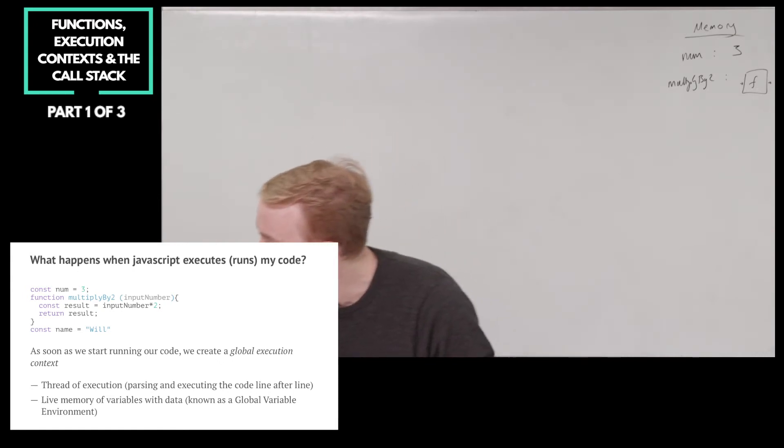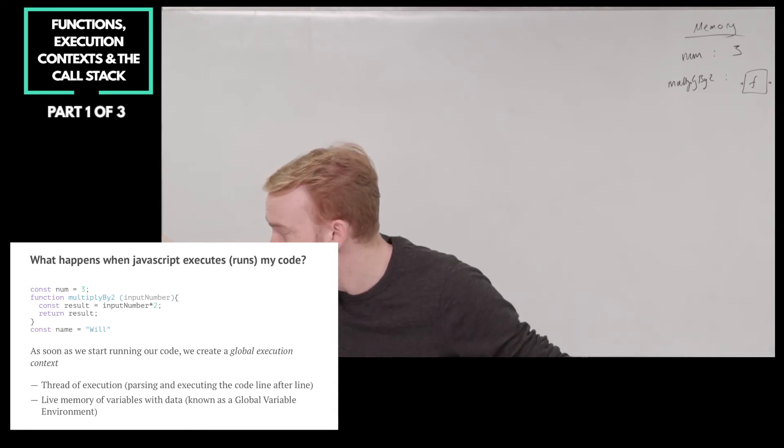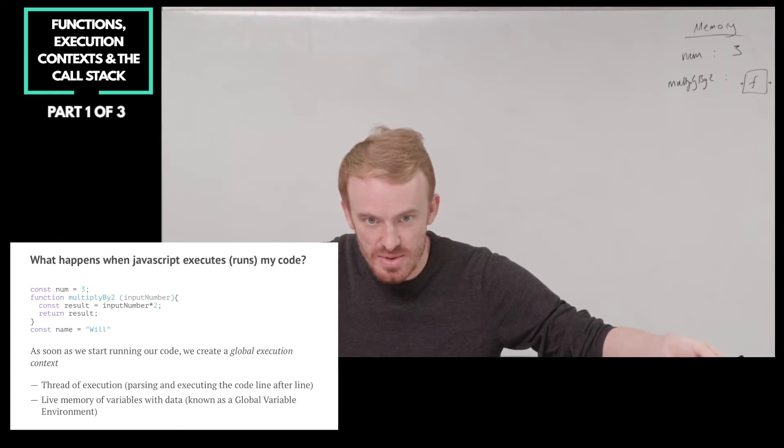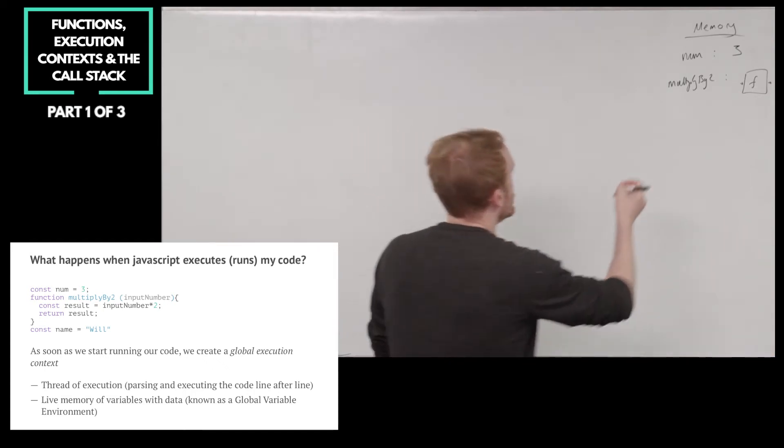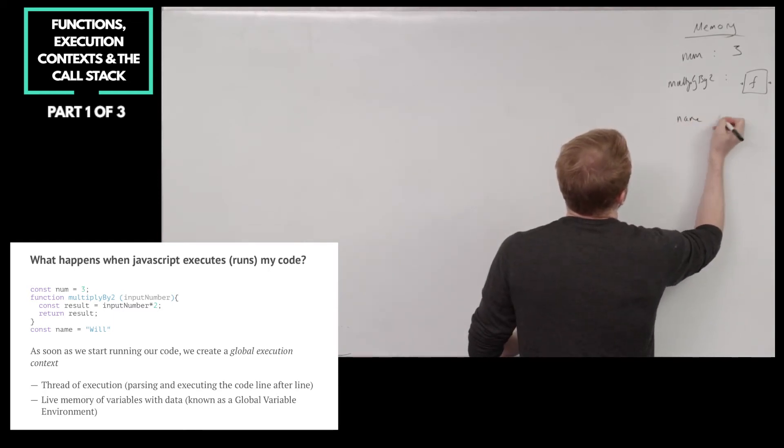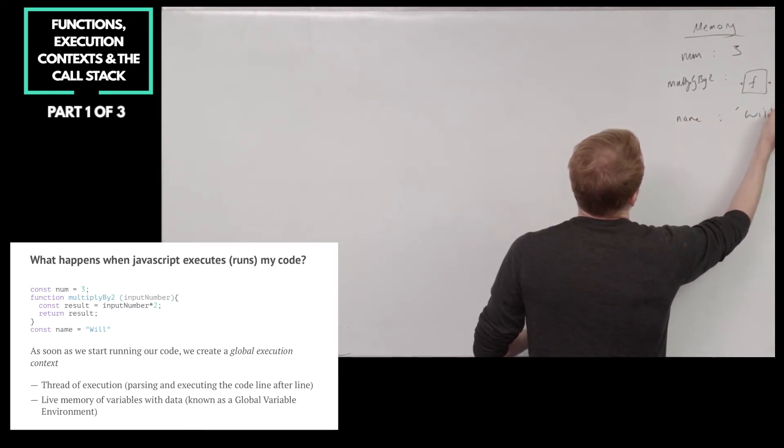Our thread of execution grabs num is 3, grabs multiplyBy2 as a function, grabs name is Will, and it never goes inside multiplyBy2 unless we call multiplyBy2. If we don't call multiplyBy2, we never go inside it. Alright. So there we go. Name is declared and stored as Will.